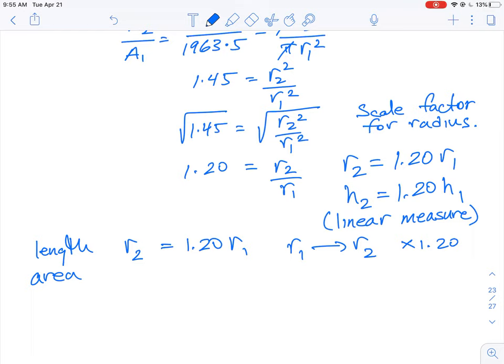So area, we know, is actually dependent on the square of the radius. So if I was to say area was going to go from area 2 is going to be equal to the square of that term. So it's going to be 1.2 squared times area 1.